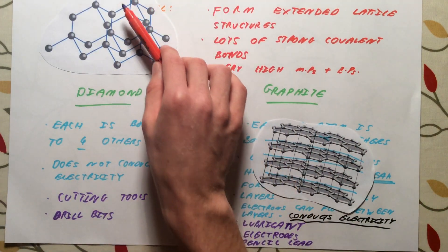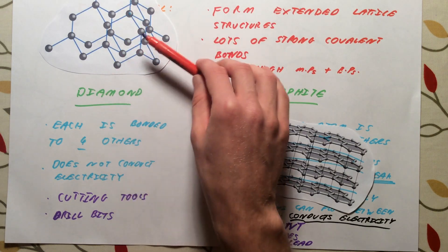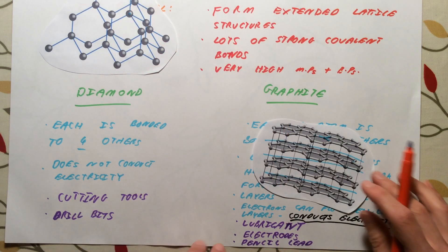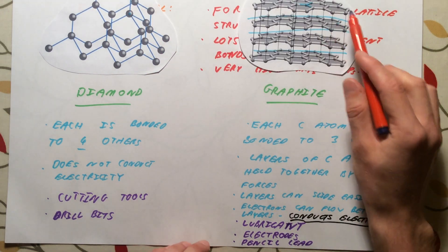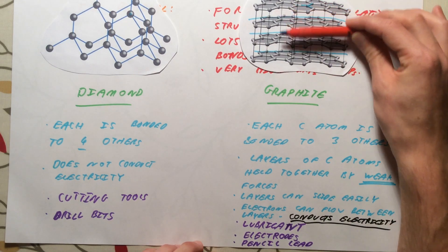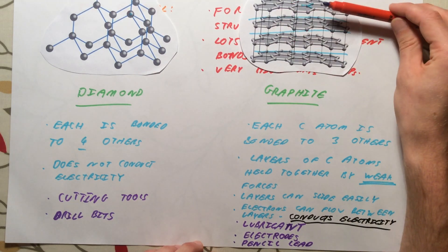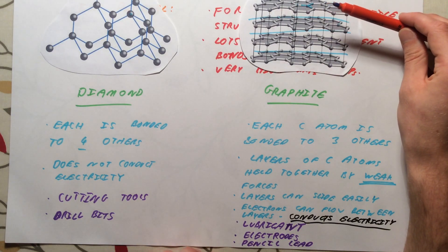Diamond: every carbon is bonded to four others. They're extremely strong. Do not conduct electricity. Use for cutting tools, drill bits. Graphite: carbon atoms are only bonded to three others. There are weak forces between the layers. Therefore the layers can slide easily and it also conducts electricity.